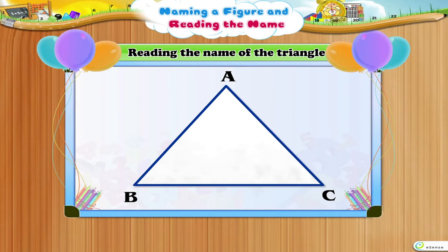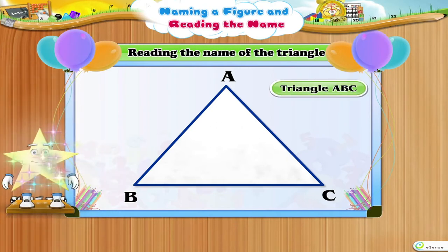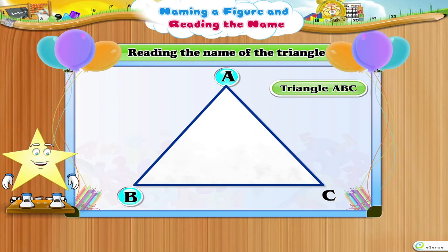Reading the name of the triangle: We can name this triangle as triangle A, B, C.